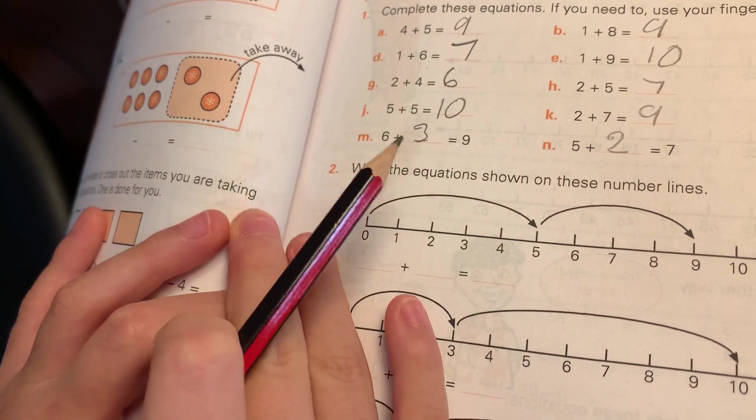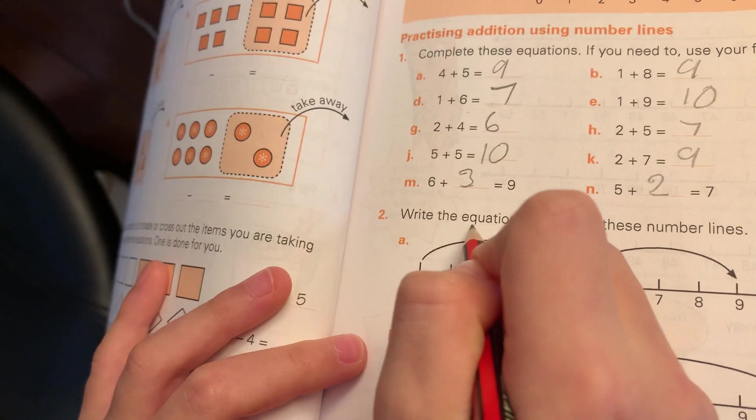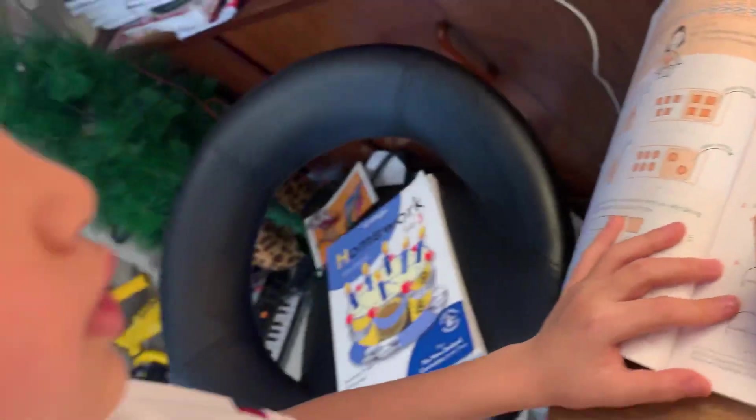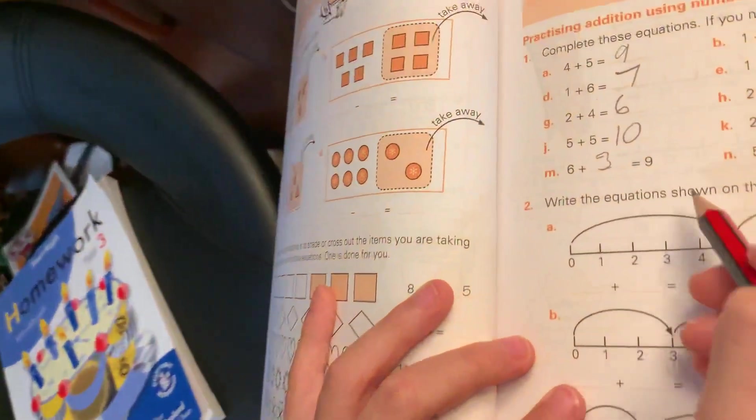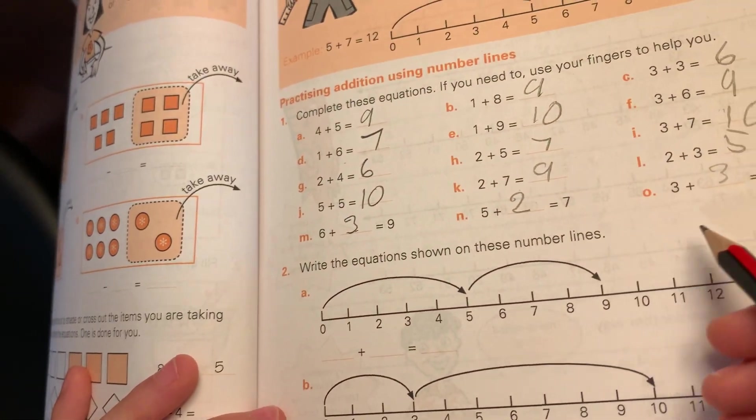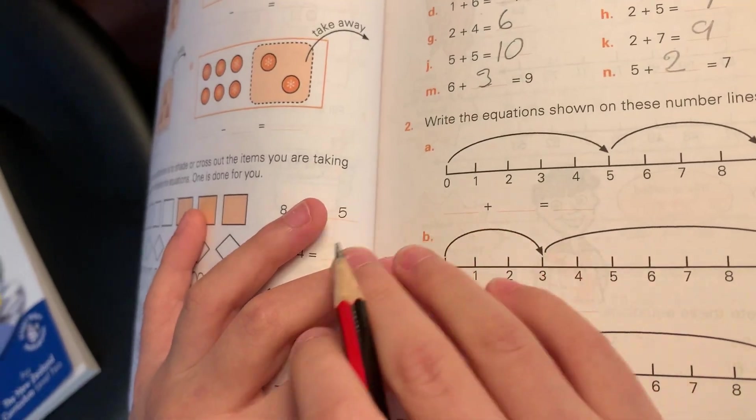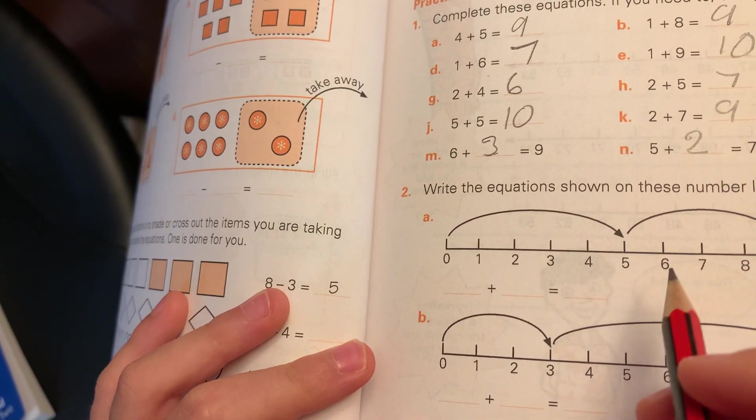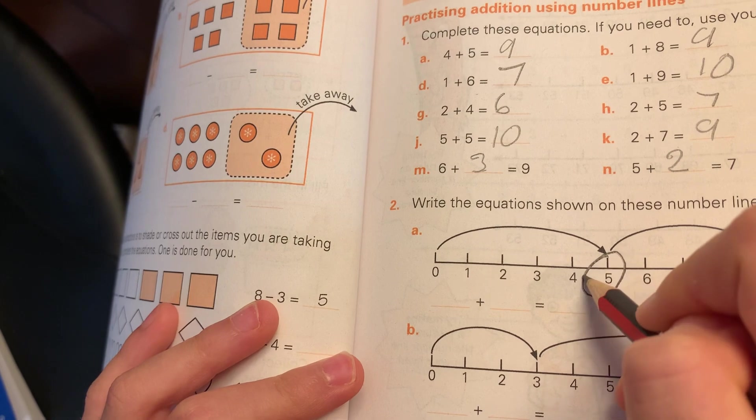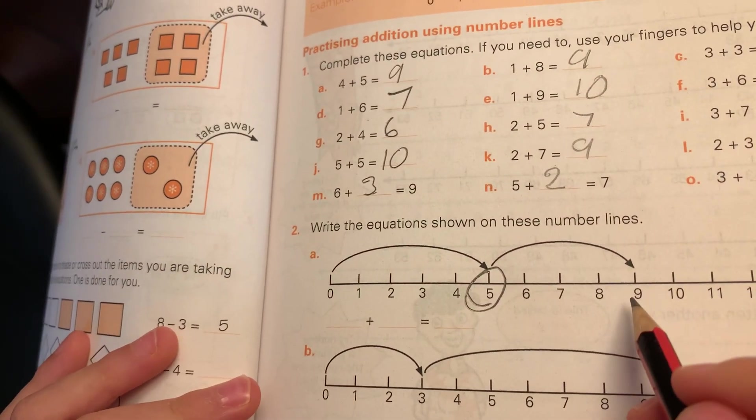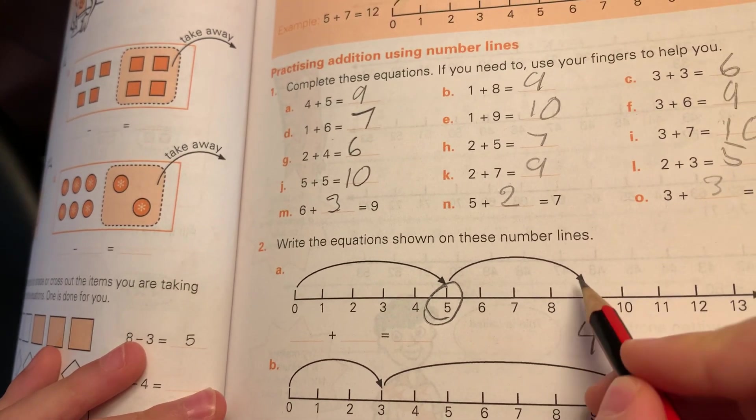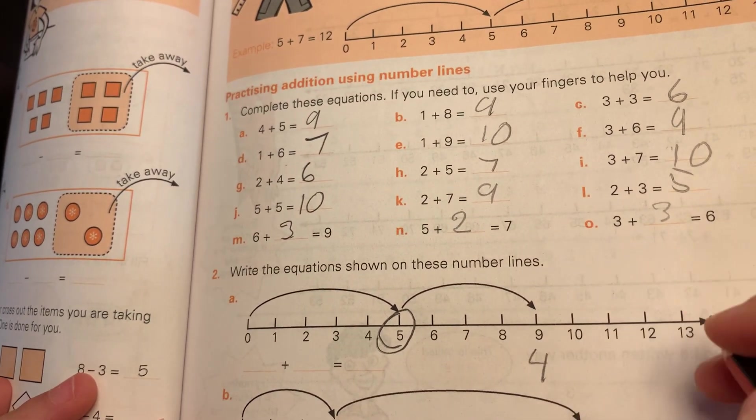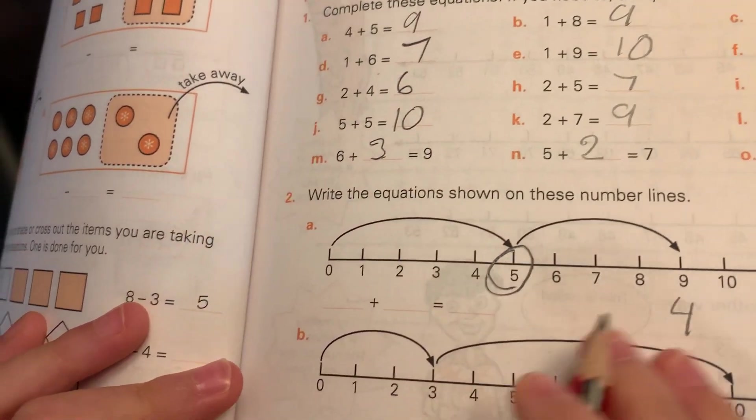Zero. So I'm going to write the equal sentences on these number lines.